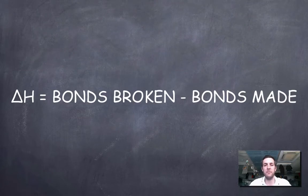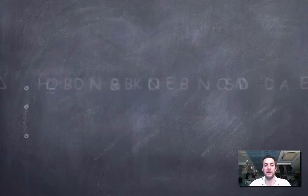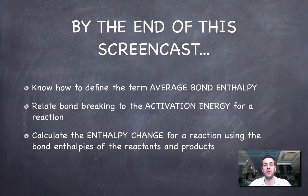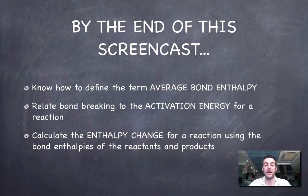Well, there was quite a lot covered there but I suppose one of the most important things was that formula there on the screen and that is that the enthalpy change is the bonds broken minus the bonds made. But hopefully in addition to that you also know how to define average bond enthalpy, you know what the activation energy is and how it's related to bond enthalpies, and you can also calculate the enthalpy change using that formula we just saw on the screen. As usual, any questions or comments please come along and see me or post a comment on YouTube. Thank you.